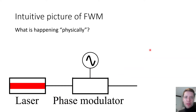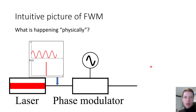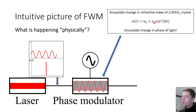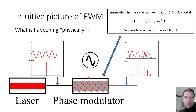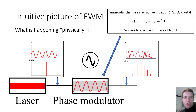To understand four-wave mixing, it's helpful to first consider the linear case where a laser is being modulated with an external phase modulator that you can buy off the shelf. The laser signal enters the phase modulator, which is being driven with a sinusoidally changing voltage. That causes the refractive index inside to change sinusoidally, which in turn causes the phase of the light to change sinusoidally.